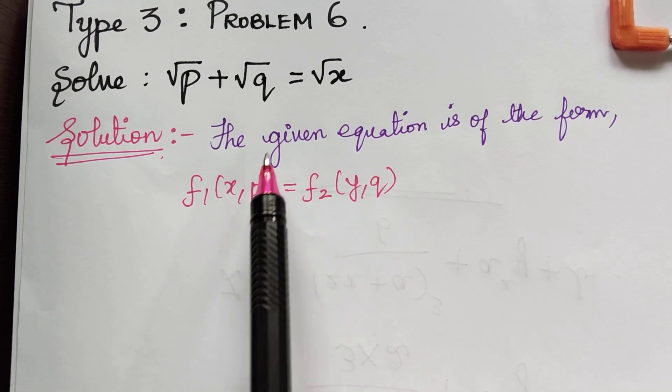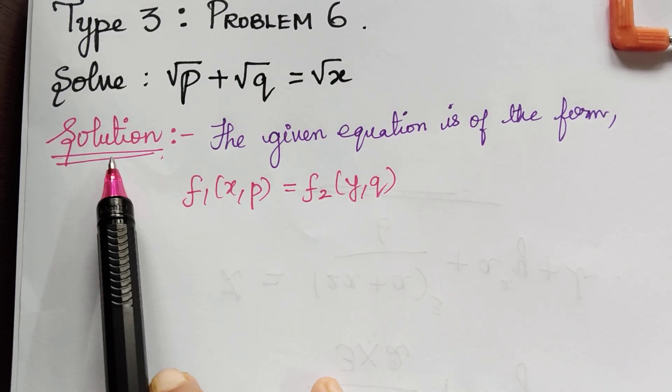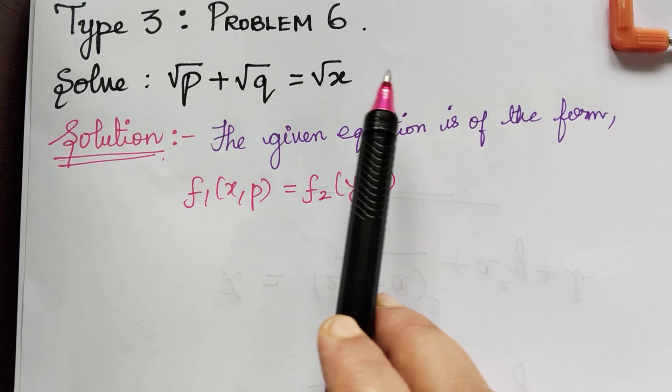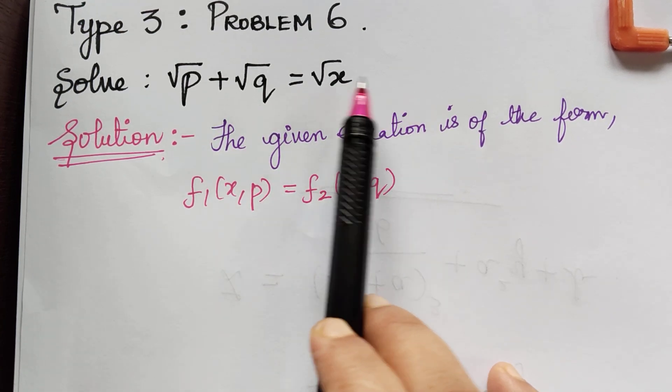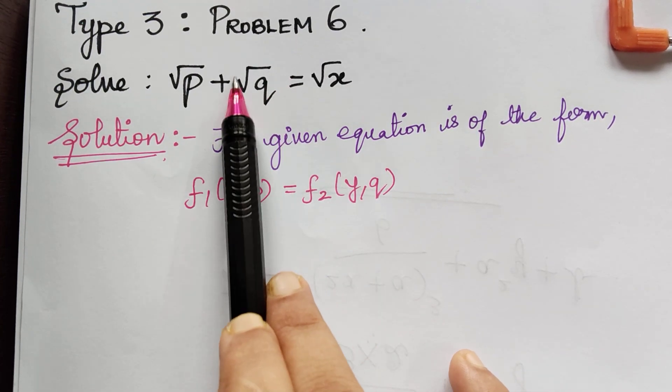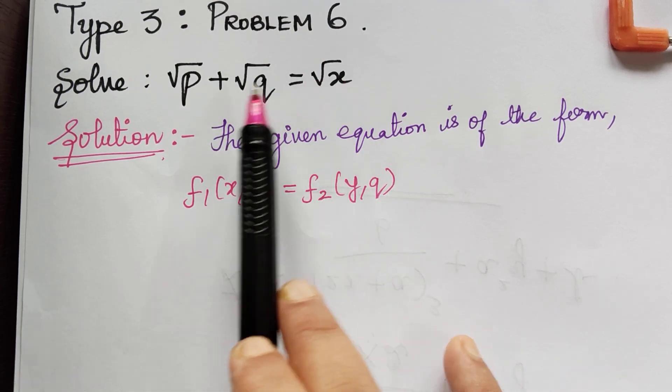So whenever it is of this form, we have to gather the x and p terms to the left of the equation and y and q terms to the right of the equation. Though y is not present, we gather this term q to the right. So let us do that.